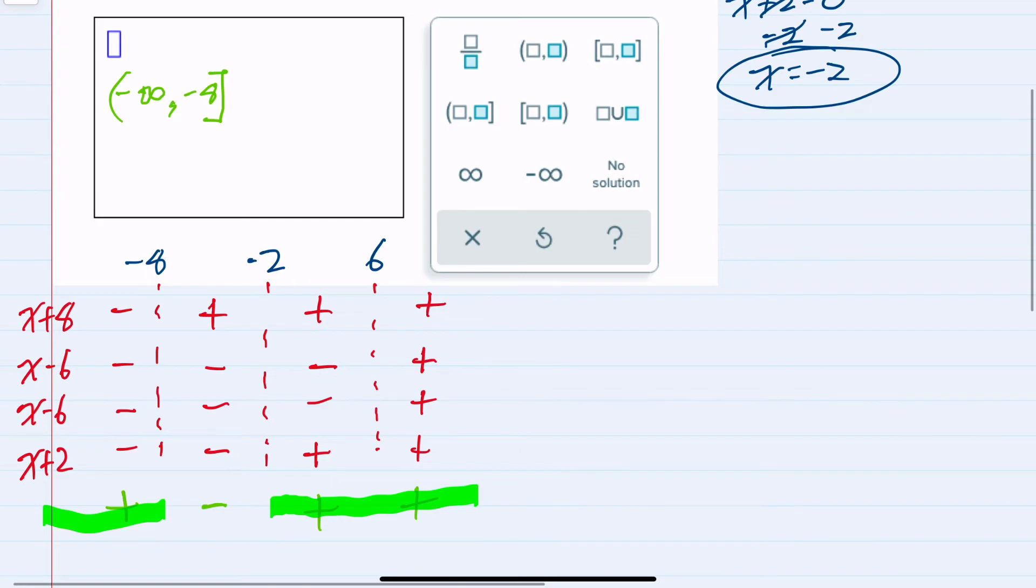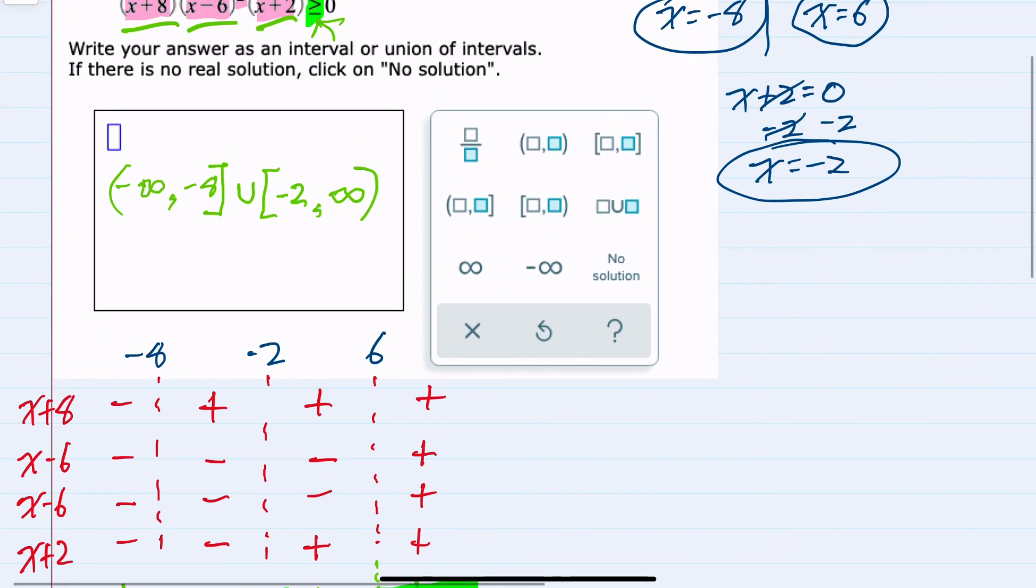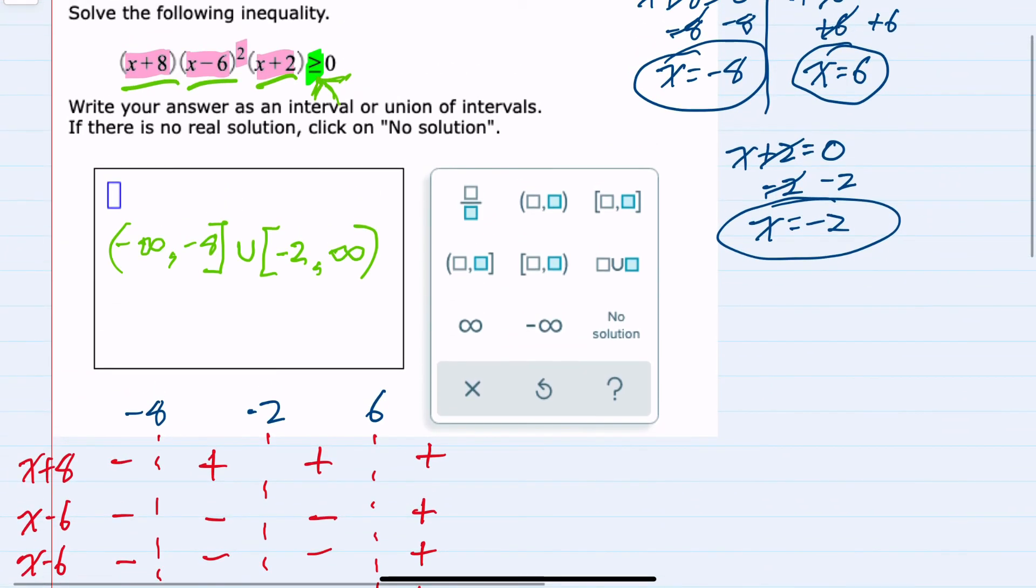And then it is also positive or 0 when x is larger than negative 2. So a union. I'm again including negative 2 and going all the way to positive infinity. And in this case, I did not need to list the 6, because at 6, while it's equal to 0, we were looking for greater than or equal to 0. So x values in these intervals would satisfy the inequality.